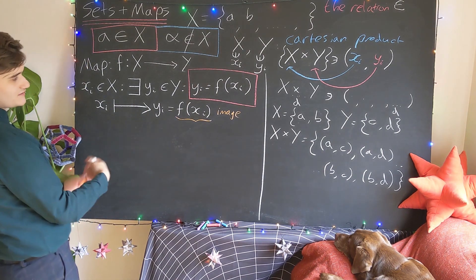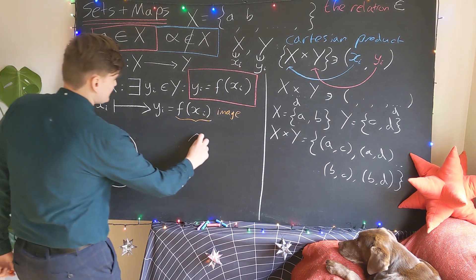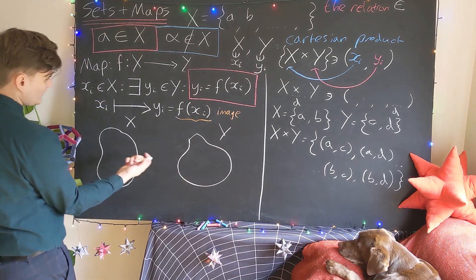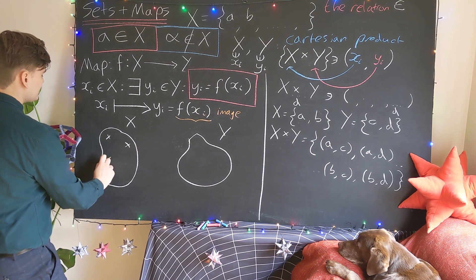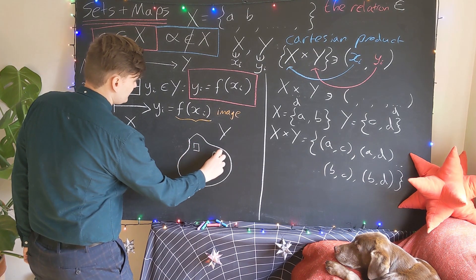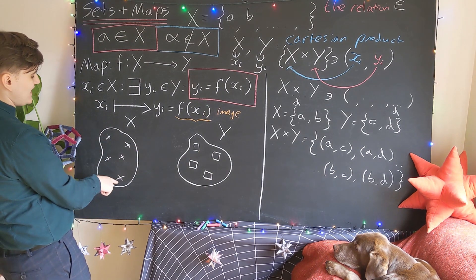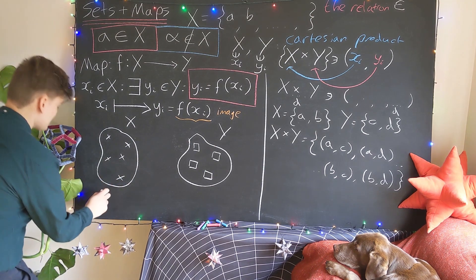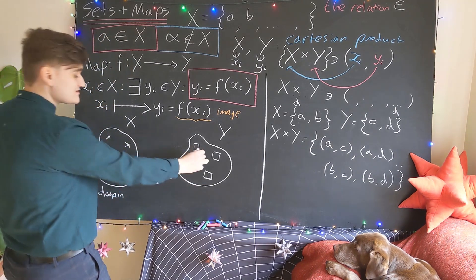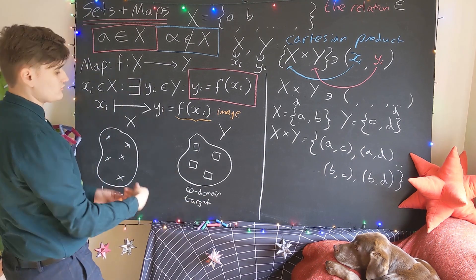It's convenient to visualize this by imagining our two sets as abstract blobs — this is the set x, this is the set y. We have some elements in x, and the y elements are separate. Now the set that we're mapping from is referred to as the domain, and the set that we're mapping into is referred to as the codomain, or in looser language the target set.